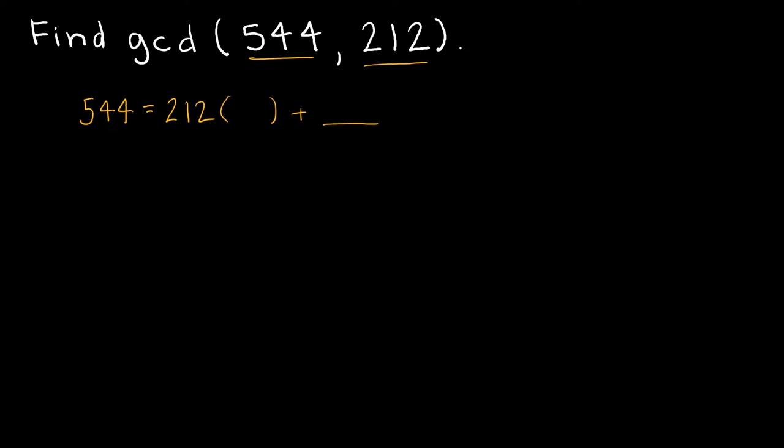So this process should look familiar to you because we've done it before. So if I were doing this, I would find that 212 times 2 with a remainder of 120 is the same as 544.